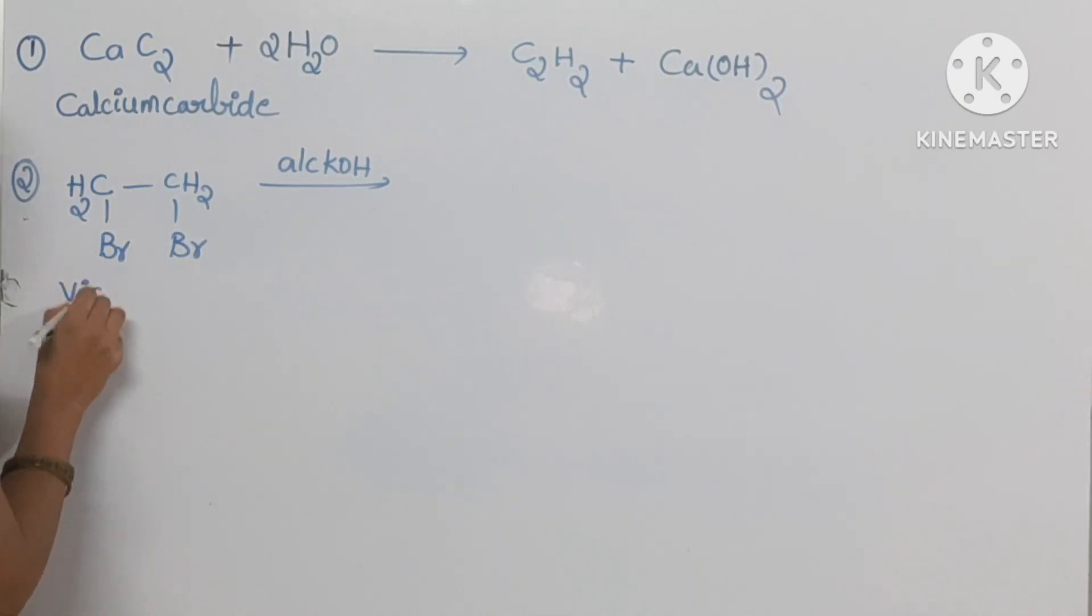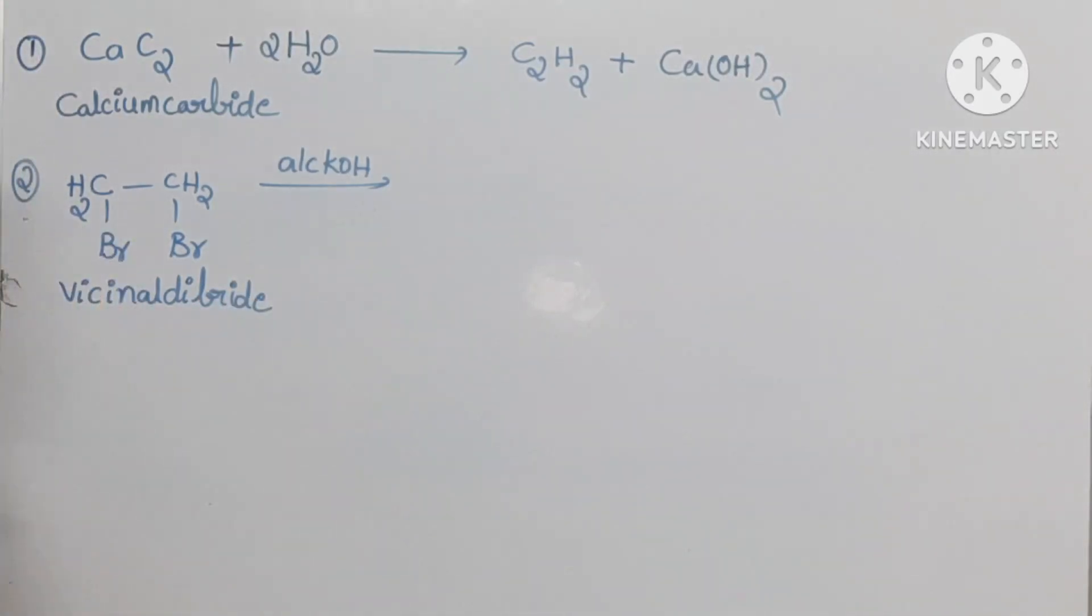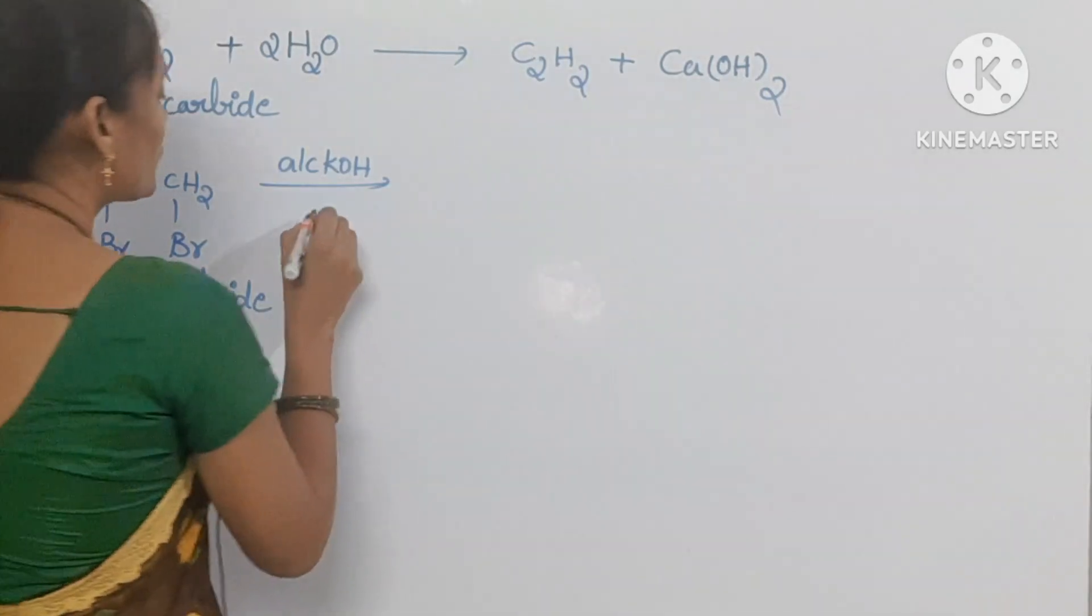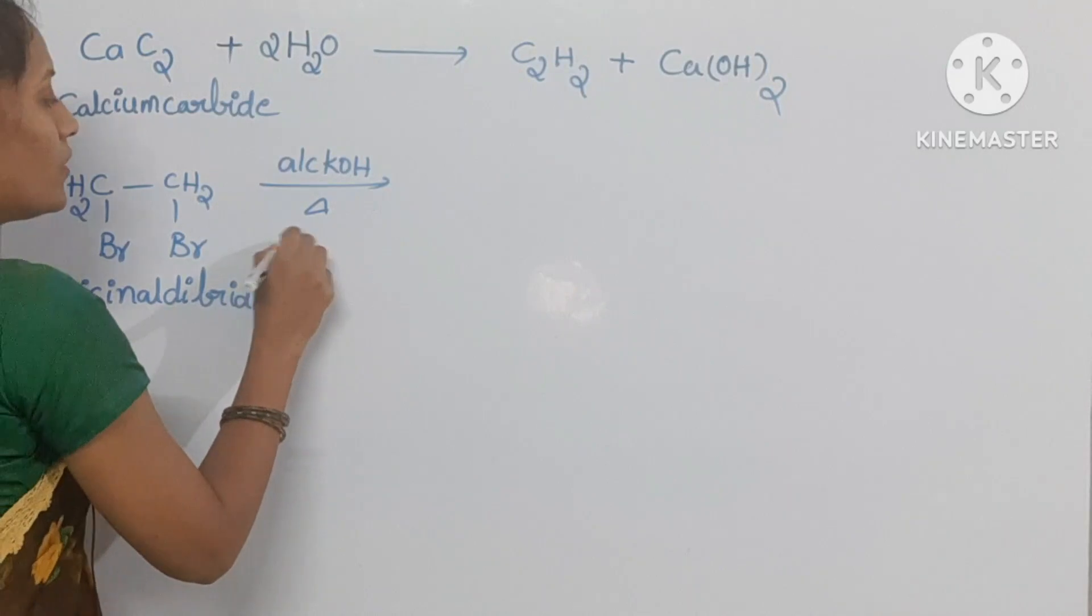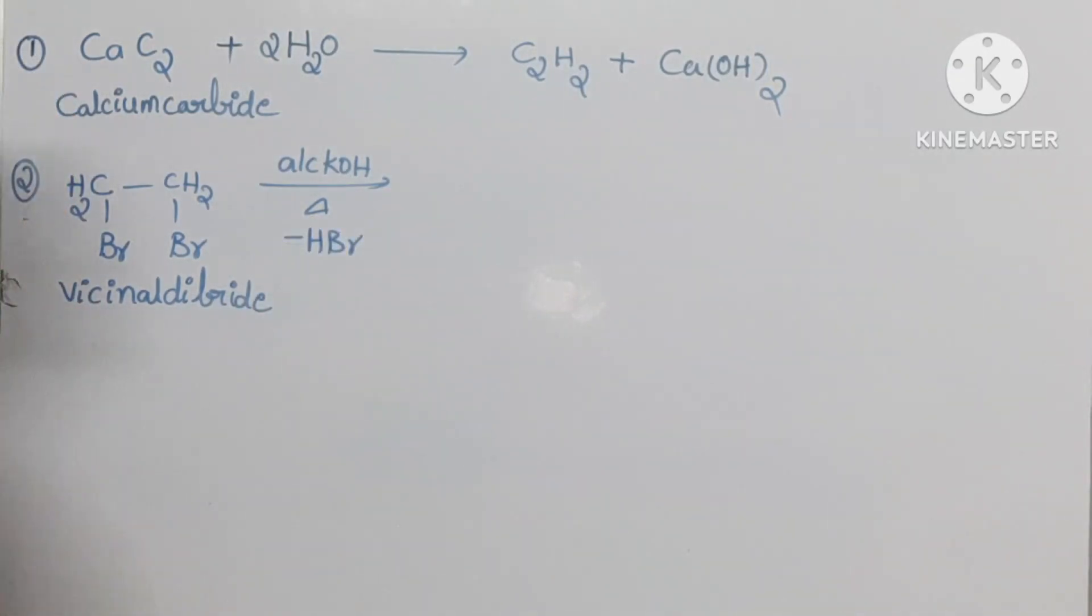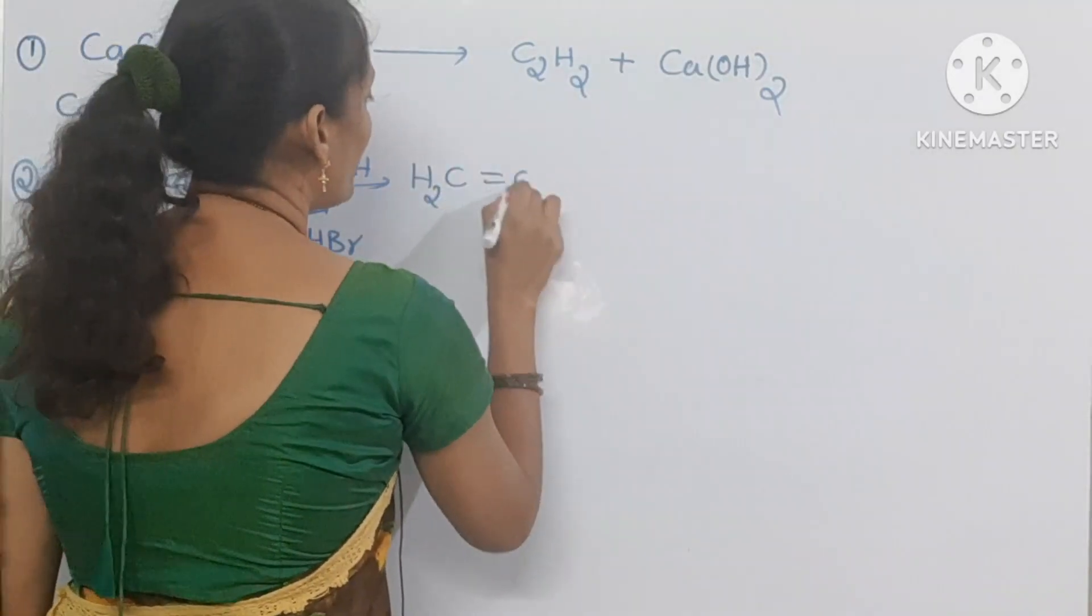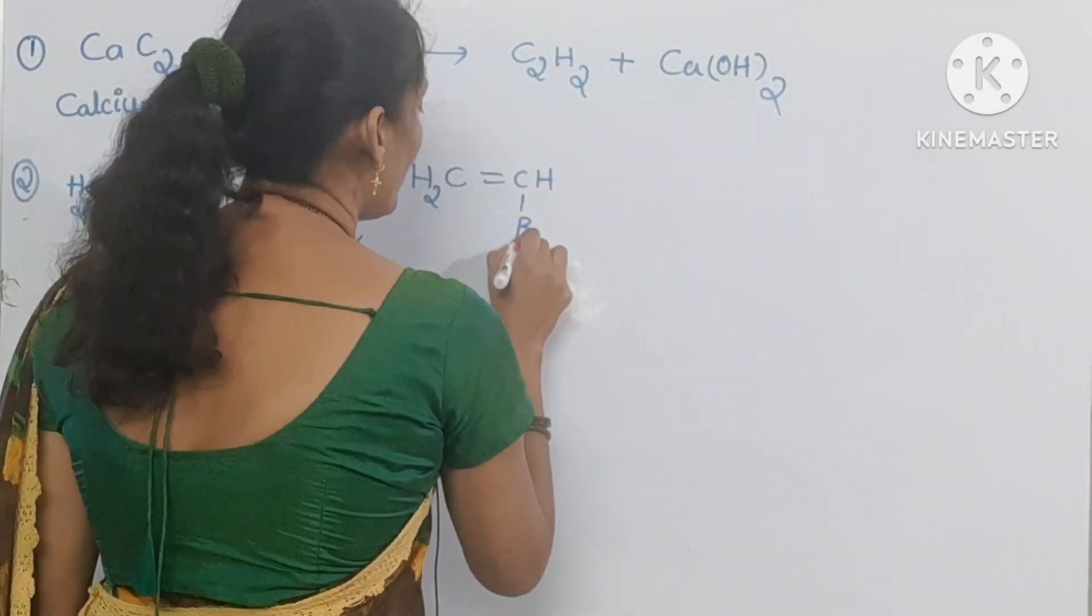Here heating is necessary and one mole of HBr would be eliminated and the product is CH2 double bond CHBr.